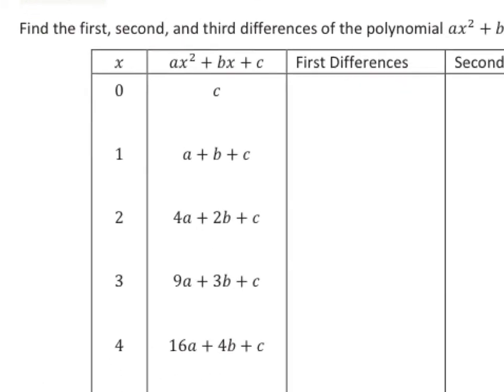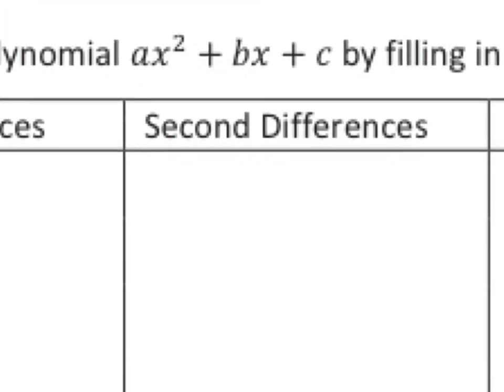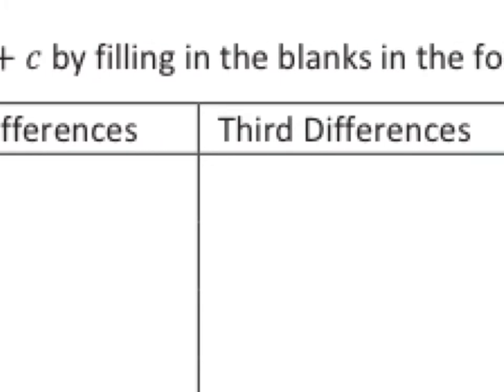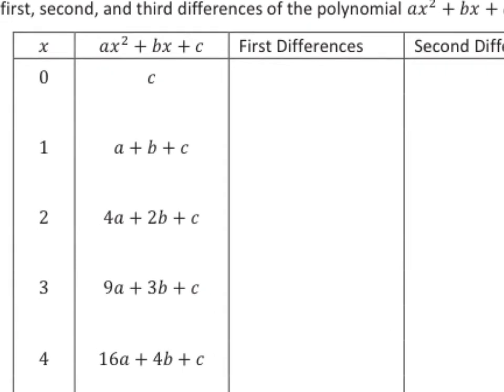The next one is find the first, second, and third differences of the polynomial AX squared plus BX plus C by filling in the blanks in the following table. Okay, so it's giving you your list. Keep in mind, this is important, and you're going to see why once we fill in this table. So they've plugged in the 0, 1, 2, 3, and 4 into that AX squared plus BX plus C to generate that list of items for you there. Now we have to find the first differences. We'll use some scratch paper, just paper on our desk. We don't have to do it on the screen. For the first difference, if we did this minus this, then what would we come up with? A plus B. A plus B.